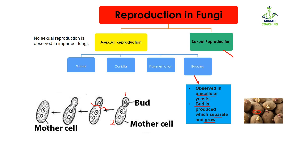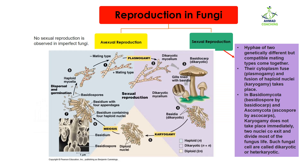Now let's talk about sexual reproduction. Sexual reproduction takes place when two hyphae that are genetically different but compatible for mating come together. Two parents are required, so two genetically different hyphae come together and share their nuclei. In the diagram, you can see one is the negative mating type and one is the positive mating type. They come close to each other and fuse their cytoplasm — this fusion of cytoplasm is known as plasmogamy.